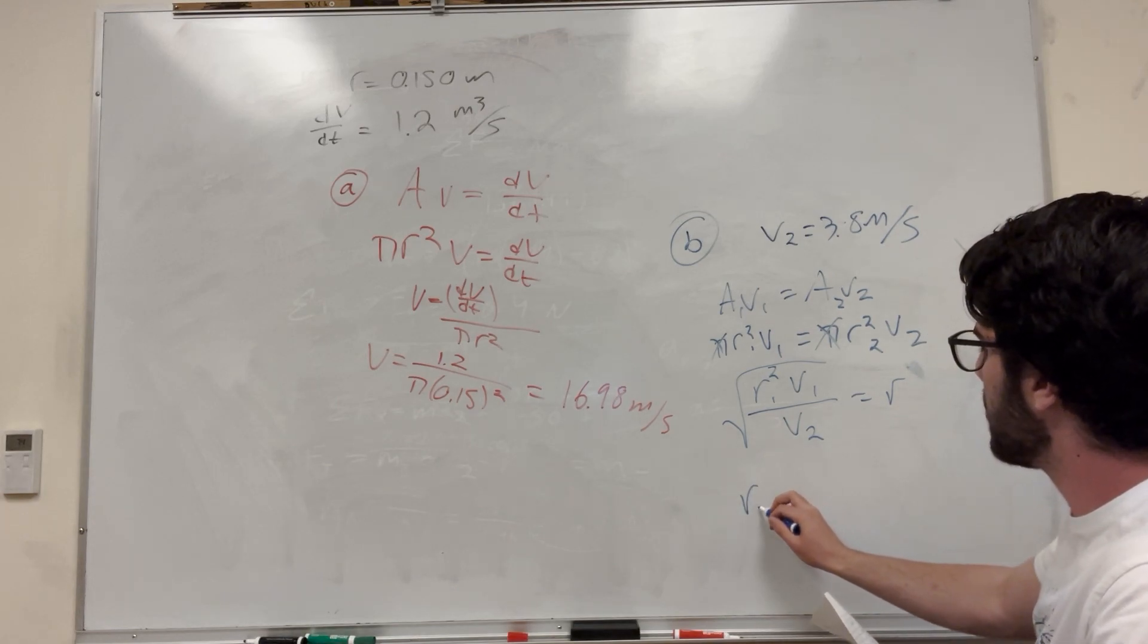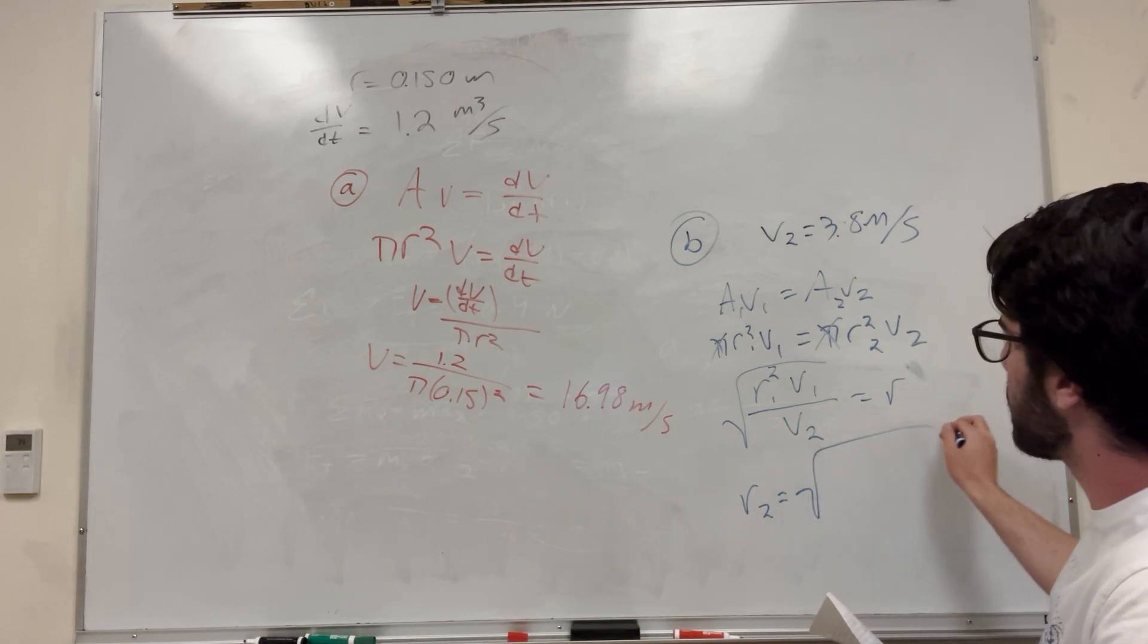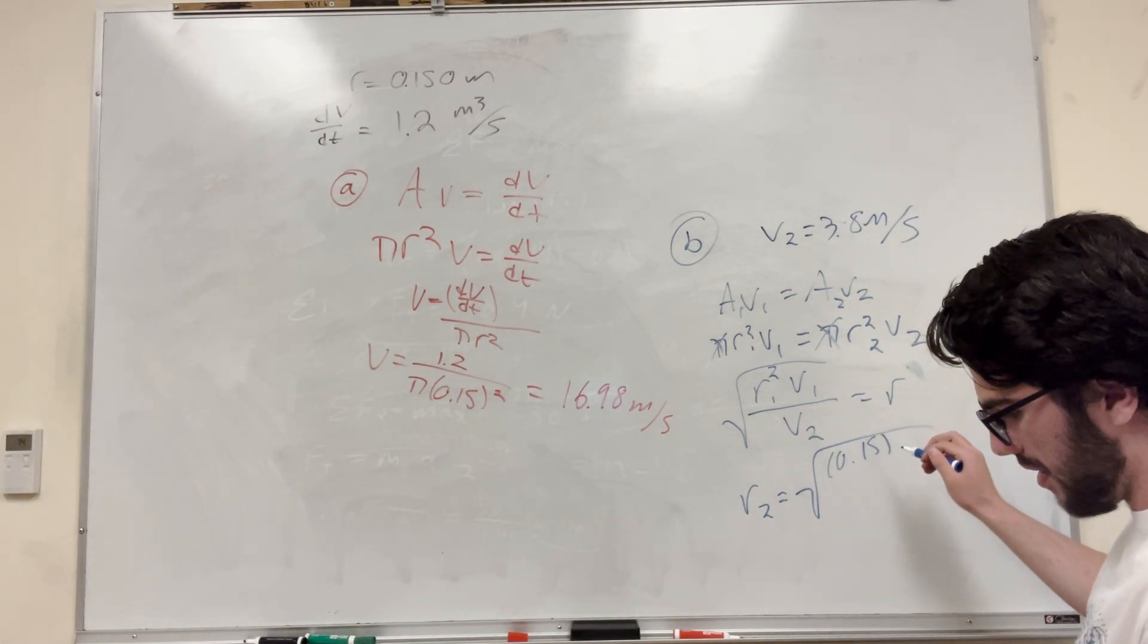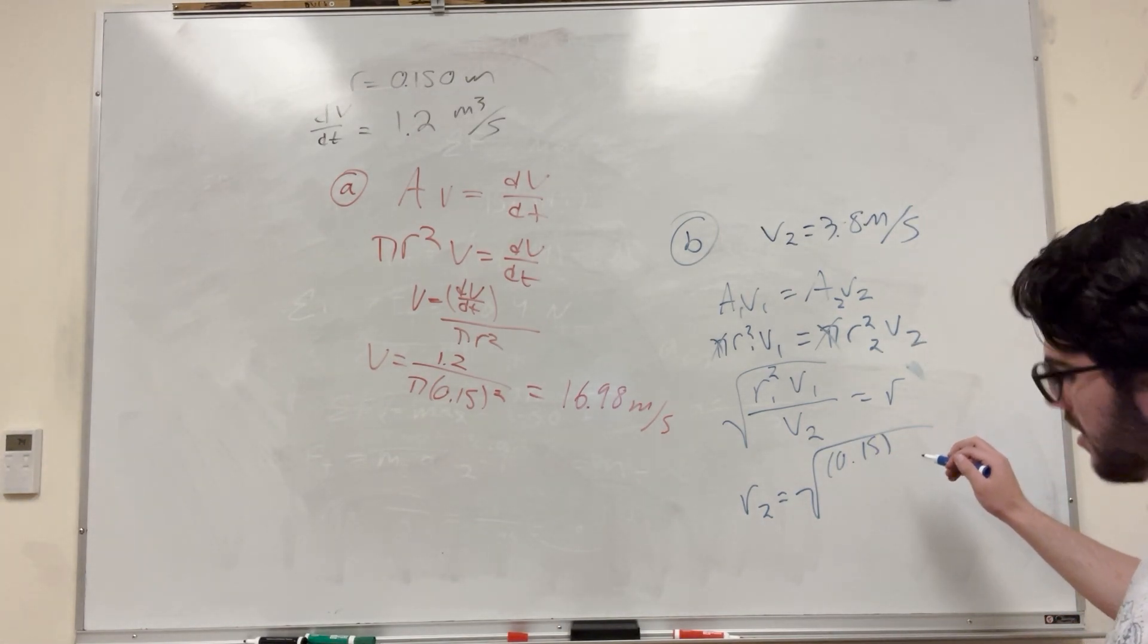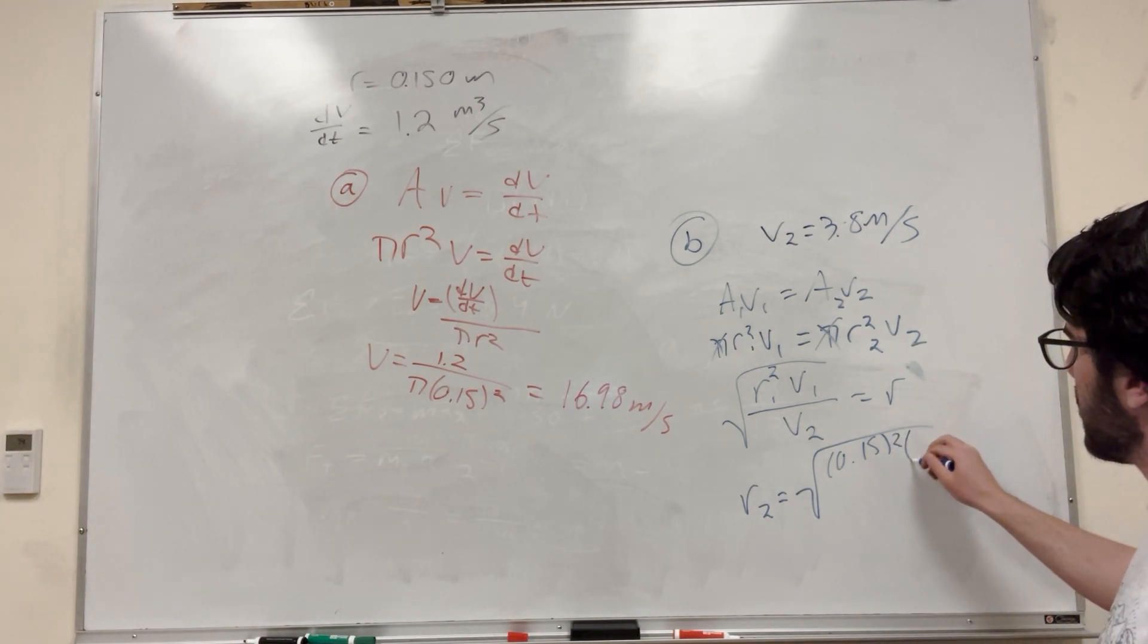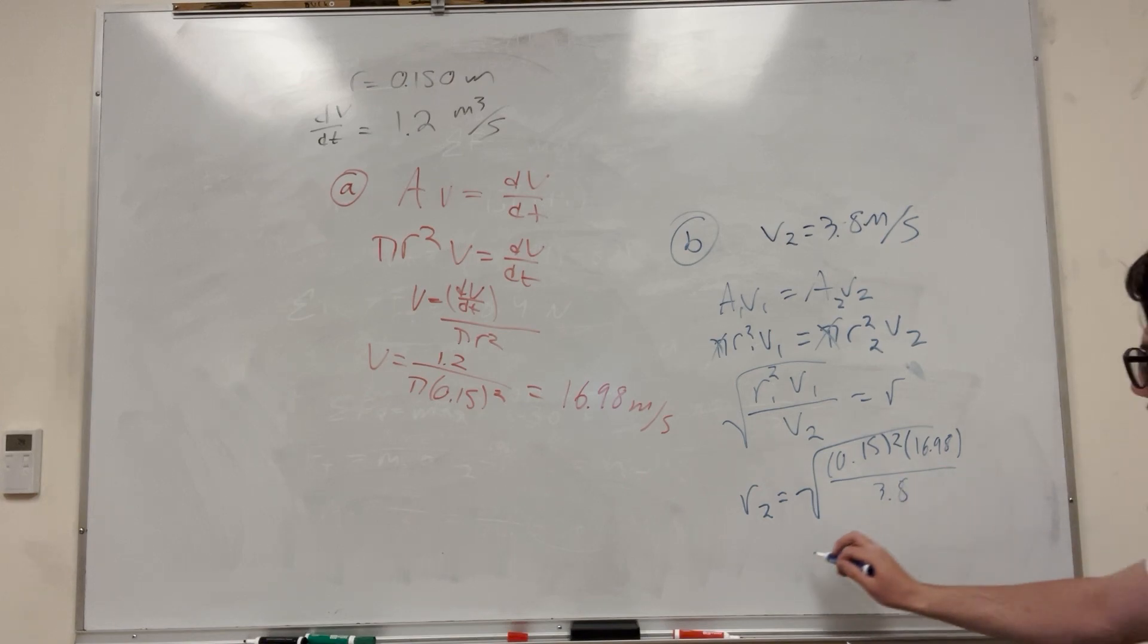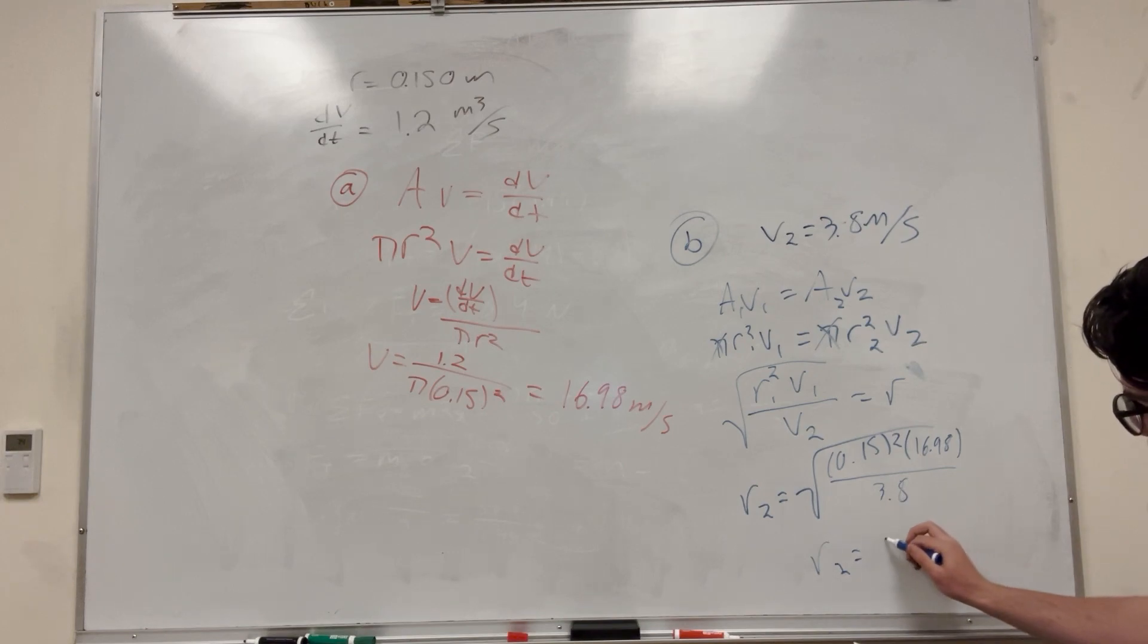So r₂ equals the square root of 0.15² times 16.98 divided by 3.8. If you solve this, you get 0.32 meters, which makes sense.